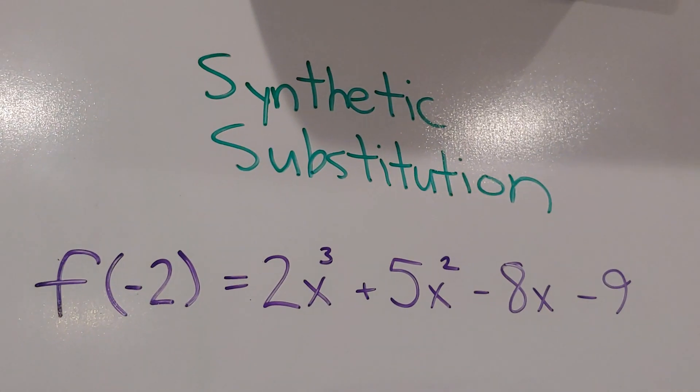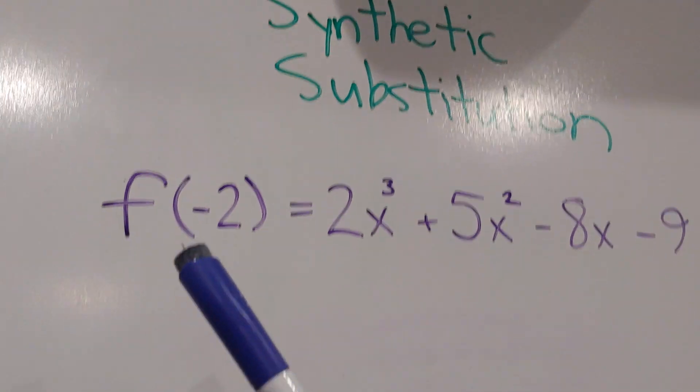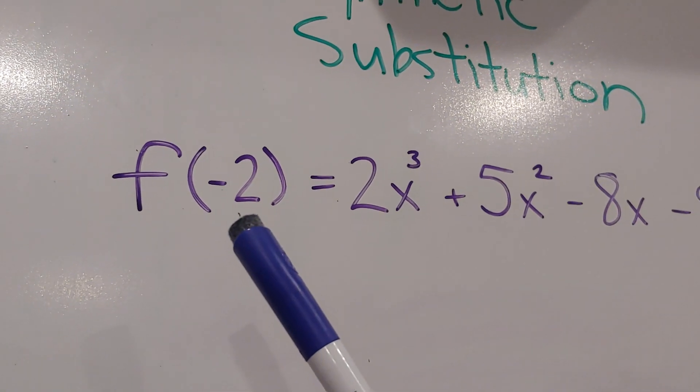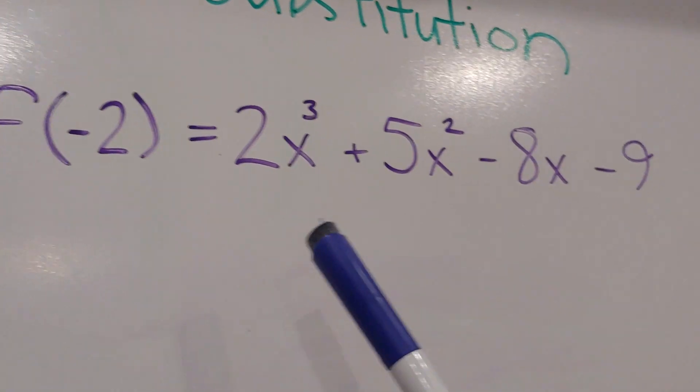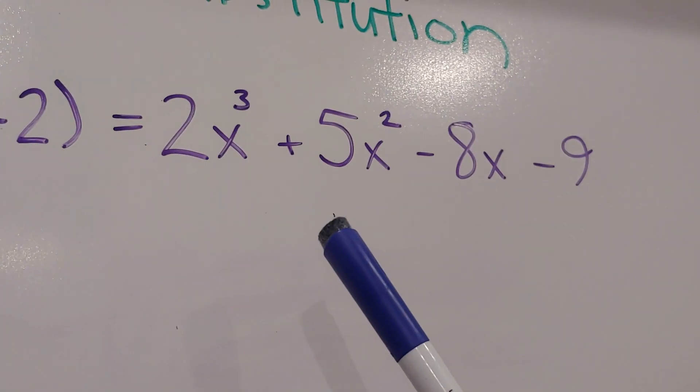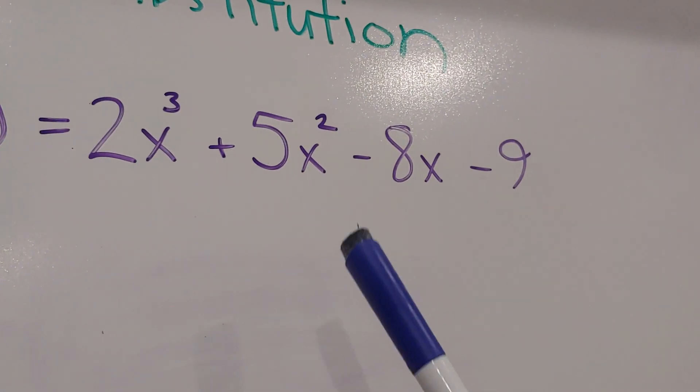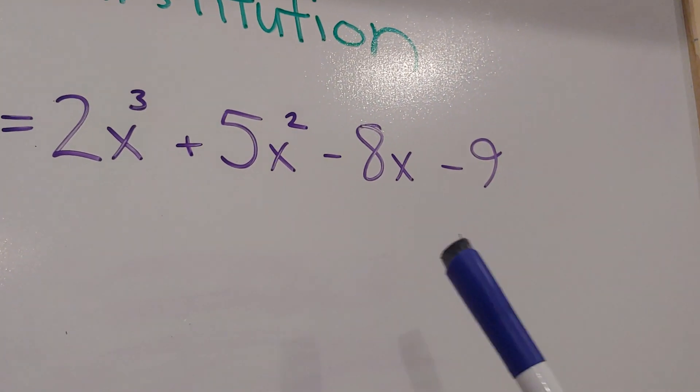I'm going to show you how to do this math equation. So we have f and a negative 2 in between these parentheses equals 2x cubed plus 5x squared minus 8x minus 9.